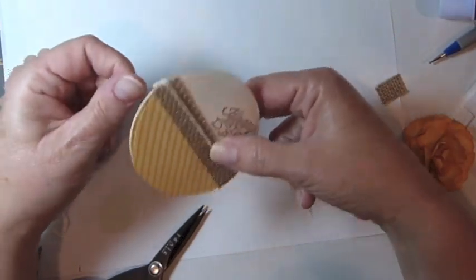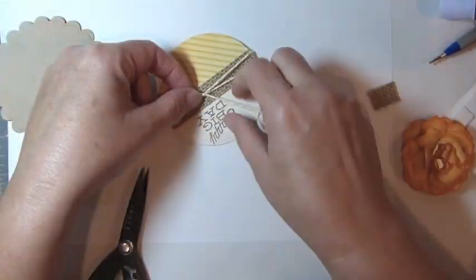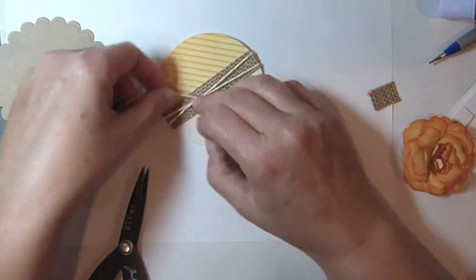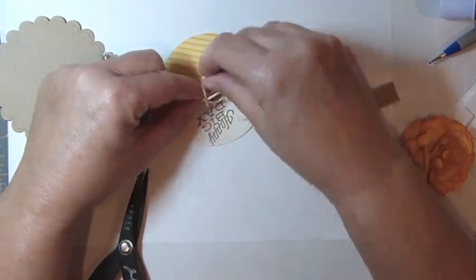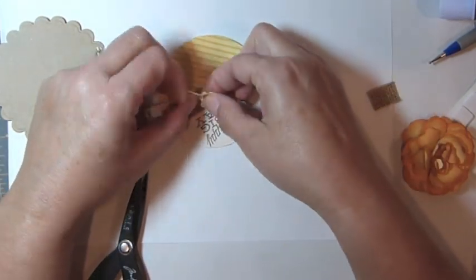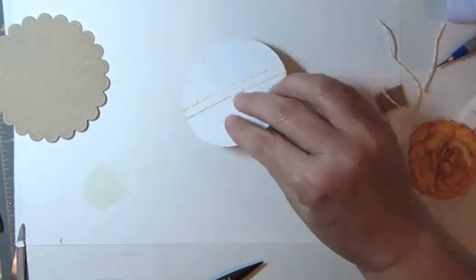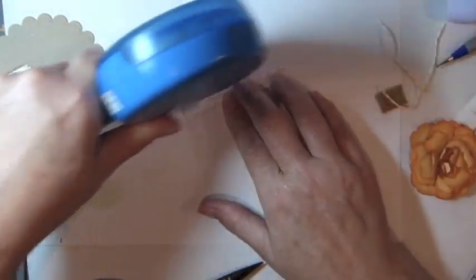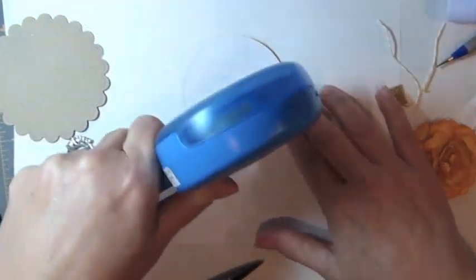Wrap twine around your circle and then tie in a bow. Adhere your layers together and then adhere to your gift tin.